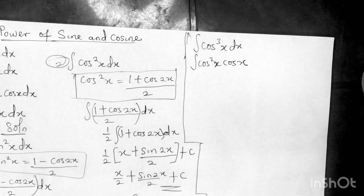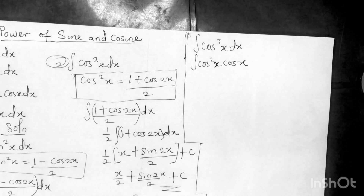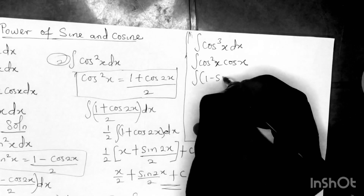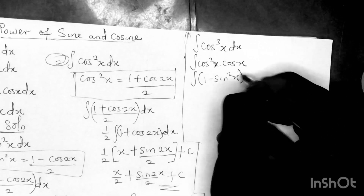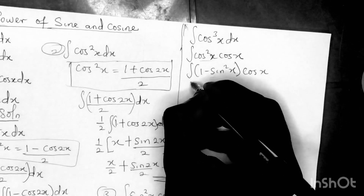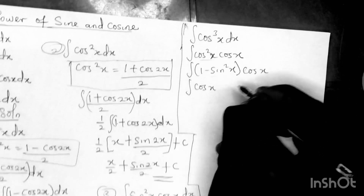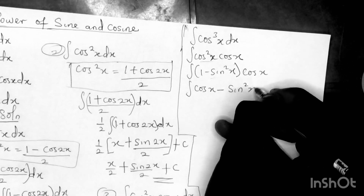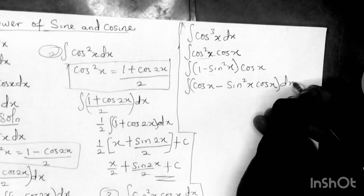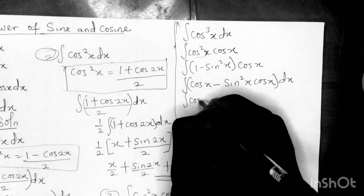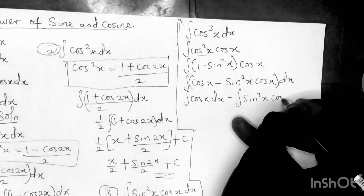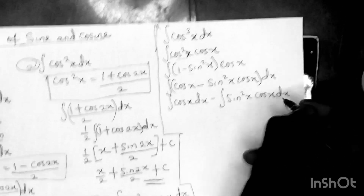From the double angle identity we know that cos squared x equals 1 minus sin squared x. Substituting, the integral becomes the integral of (1 minus sin²x) times cos x dx. Multiplying this out gives the integral of cos x minus sin squared x times cos x dx.